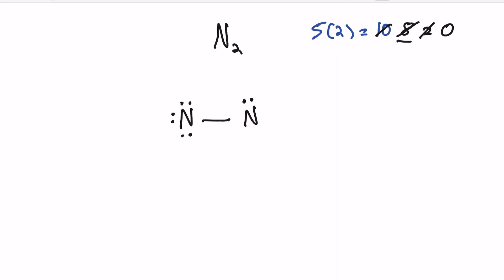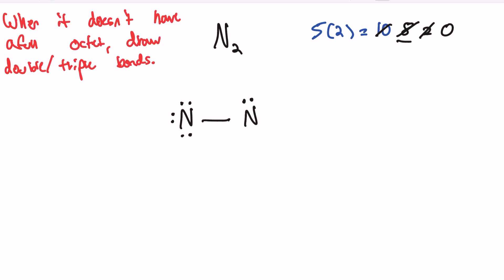Let's check if we drew this correctly, starting with the octet. The first nitrogen has eight valence electrons — perfect, it's happy. But the second nitrogen only has four valence electrons, which is not a full octet. So how do we fix this? If an atom doesn't have a full octet, we're going to have to draw double and triple bonds.